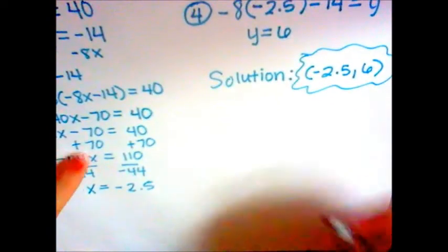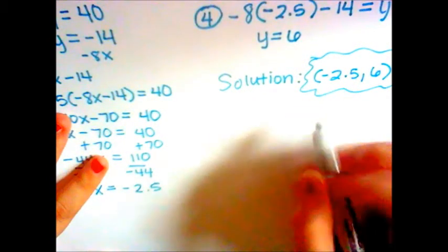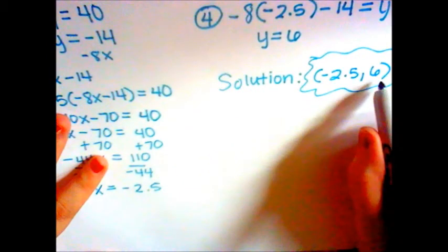To make sure your answer is correct, you would take the negative 2.5 and put it in for x and you take the 6 and put it in for y into any of these equations.